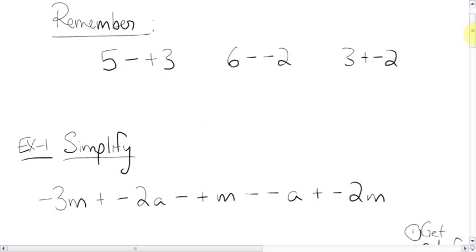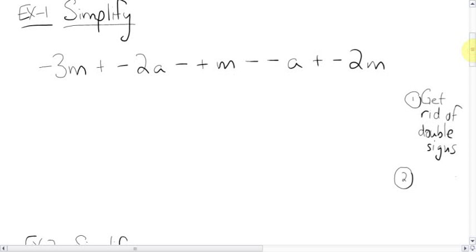First, a little trip down memory lane. What do we do with double signs? When you have a minus plus, signs are different, but different signs turn into a minus sign. Same signs became positive. Different signs were negative. Different negative, same positive. So a question like this, 5 minus positive 3 would become 5 minus 3. 6 minus negative 2, 6 plus 2. 3 plus negative 2 would become 3 minus 2.